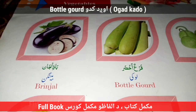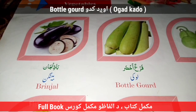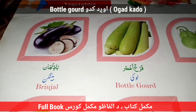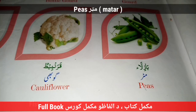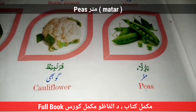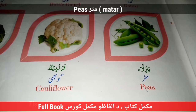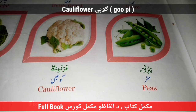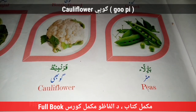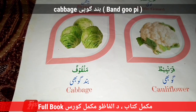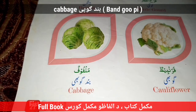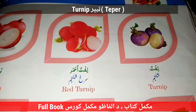Gourd — Tenday. Bottle Gourd — Ugad — Kadu. Brinjal — Banjaan. Peas — Matar. Cauliflower — Gopi. Cabbage — Band Gopi.